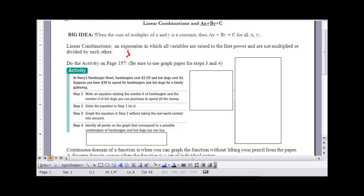So 3X plus 5Y, that's a linear combination. 2Y plus 7X would be a linear combination.